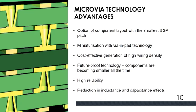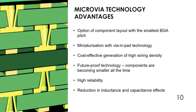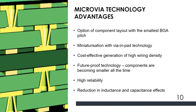Advantages include: option for component layout with the smallest BGA — miniaturization with via-in-pad technology; cost-effective generation of higher wiring density; future-proof technology because future components are all very small with very small features; high reliability and reduction in inductance and capacitance through shorter connections and shorter traces.